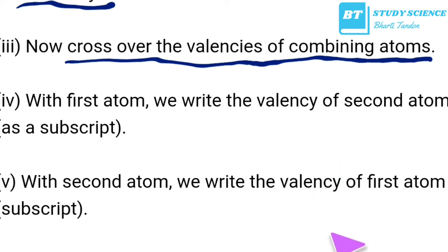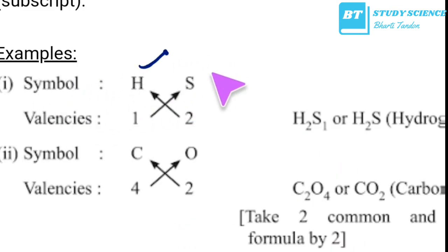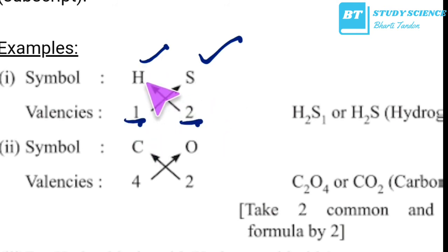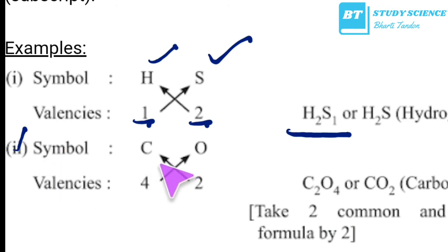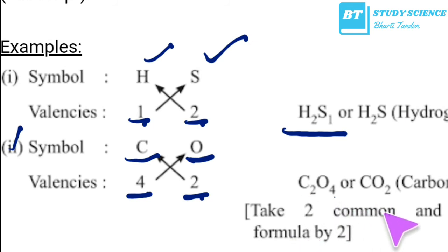For example, hydrogen (valency 1) and sulfur (valency 2): cross multiply to get H₂S — hydrogen sulfide. Second example, carbon (valency 4) and oxygen (valency 2): write C₂O₄, then divide by common factor 2 to get CO₂ — carbon dioxide.